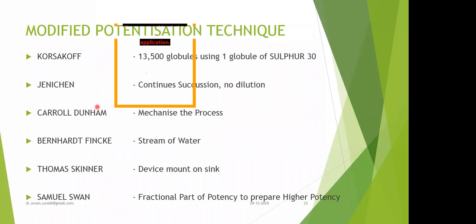Karel Dunham is the person who tried to mechanize the process of potentization using an oil bin. Bernhardt Fincke made a concept where you take the medicine in a bucket or bowl, into which you allow a stream of water. As per the ounce of water flowing out, each potency is raised. So, as the amount of water spills out, the potency rises — that is Bernhardt Fincke.